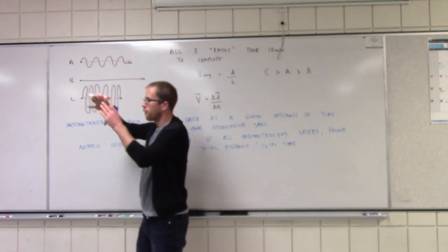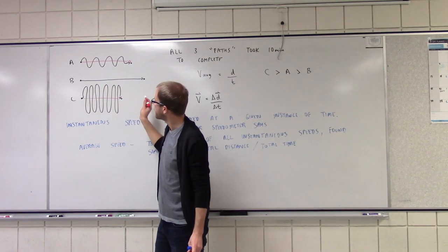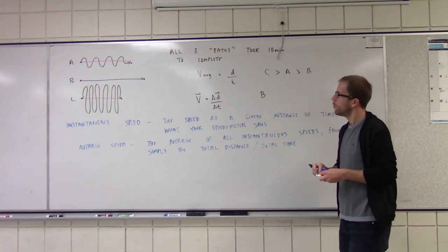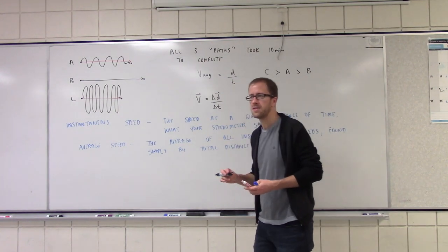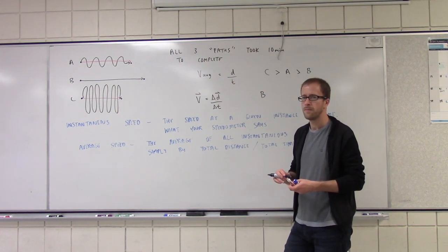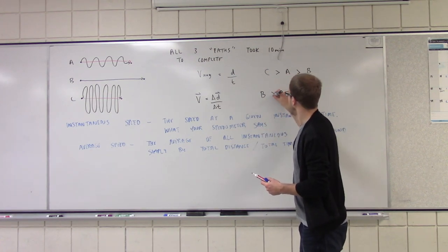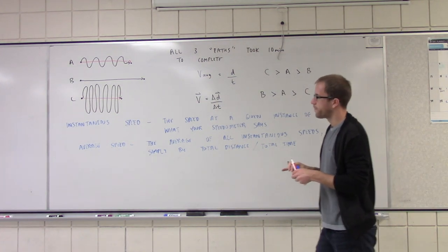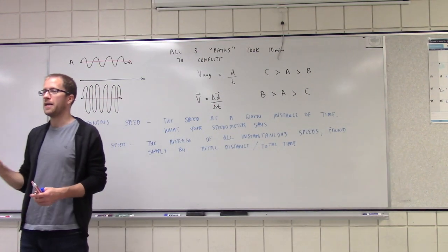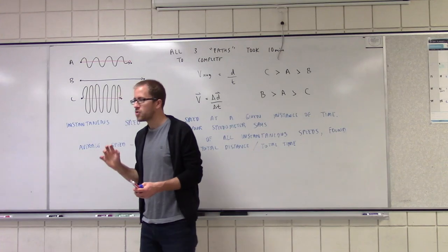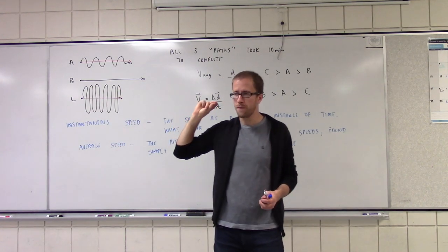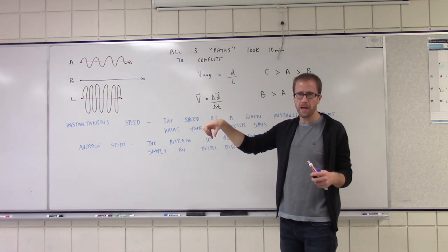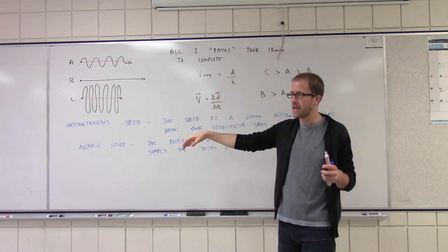We started and stopped over the greatest change in position. So B was the greatest of our velocities. What was the second greatest velocity? A. And then lastly? C. So again, velocity can be really unintuitive. We have a very strong intuition for speed and distance, but displacement can be weird. All it cares about is where you start and where you finish — it doesn't care about the path you take.